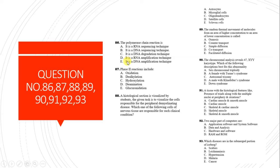Question 86: Polymerase chain reaction (PCR) is a DNA amplification technique. Question 87: Phase one drug metabolic reactions include oxidation and hydroxylation, while phase two includes glucuronidation. Glucuronidation is a phase two reaction.